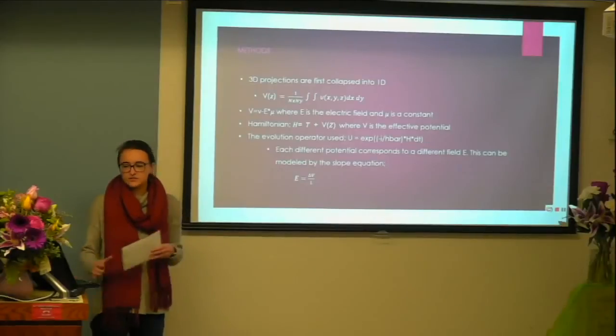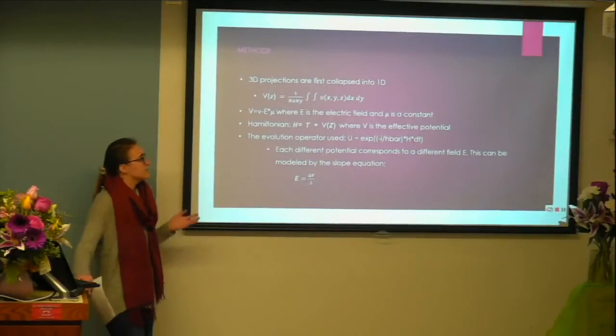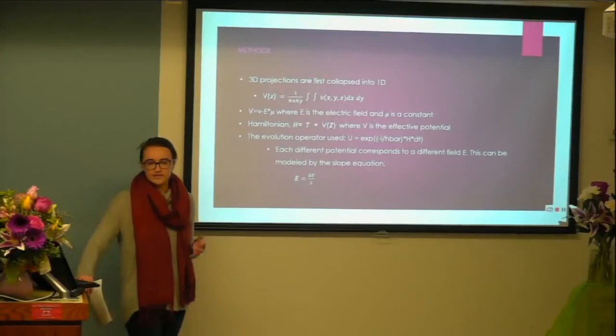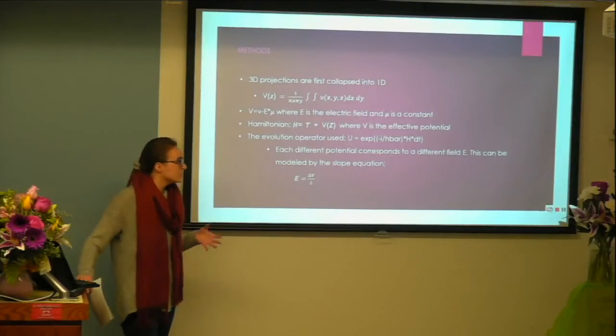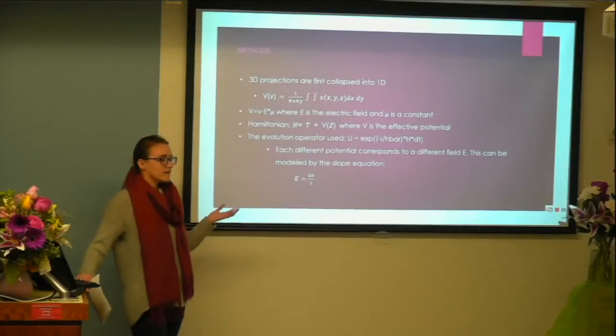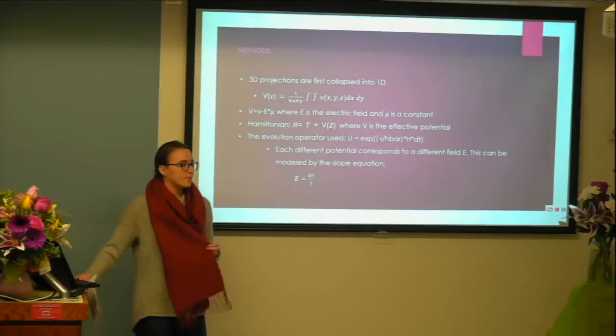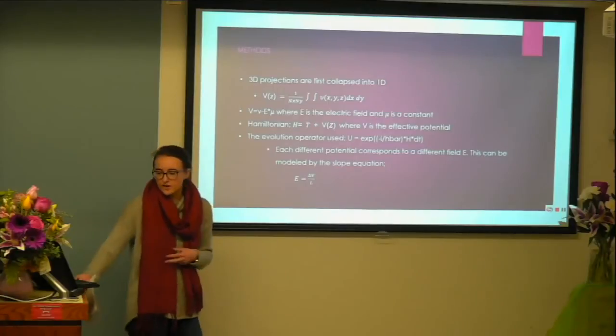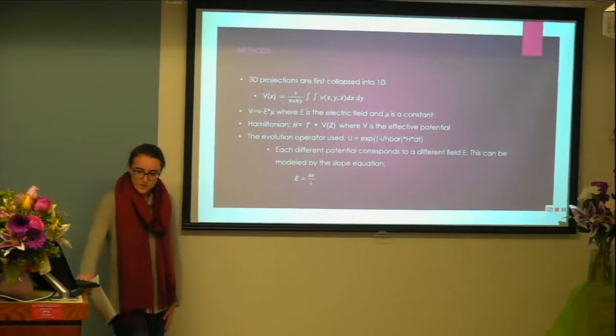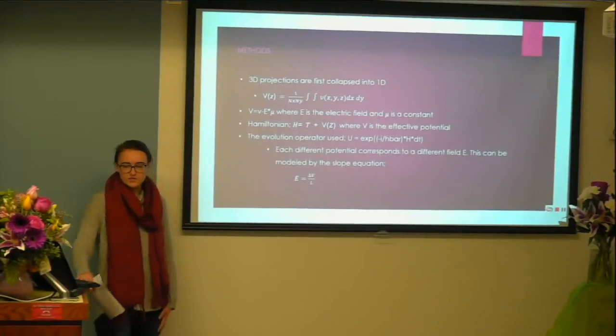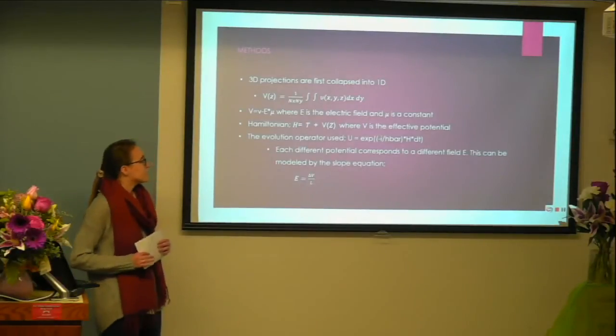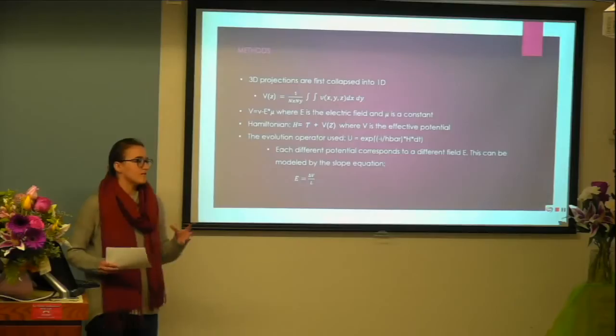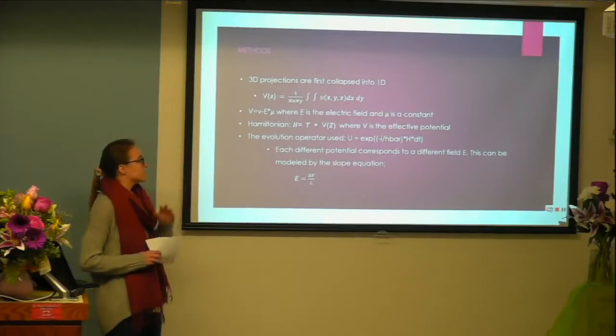So in order to first get that 3D image into a one-dimensional projection, we had to collapse our three-dimensional potential into a one-dimensional potential. To do this, you apply a double integral in order to remove your two dimensions that we're not going to be using, and then we have a normalization factor as well. Our potential is described with a relationship to our electric field, which is that capital E, which is going to be our main variable throughout, where that mu is just a constant.